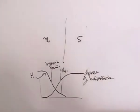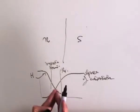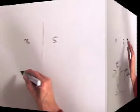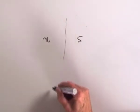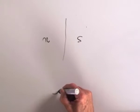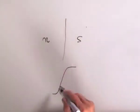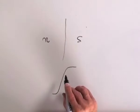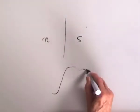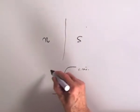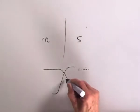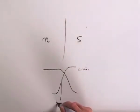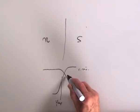But if the coherence length is much shorter, then the degree of condensation goes from normal to superconducting very fast, and the magnetic field now starts falling quickly. There's the physical boundary, and there's the magnetic boundary halfway down — the magnetic boundary is now inside the physical boundary.